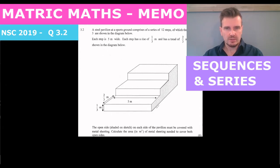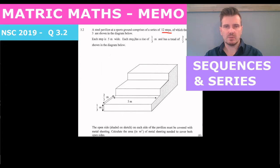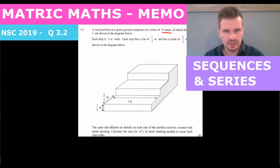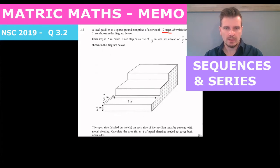So they have drawn a picture here, and they've said: a steel pavilion at a sports ground comprises 12 steps, of which the first three are shown below. Each step is five meters wide, has a rise of one third and a tread of two thirds — so that's this width here — and they want you to calculate the area of the shaded portion in meters squared to cover both open sides.